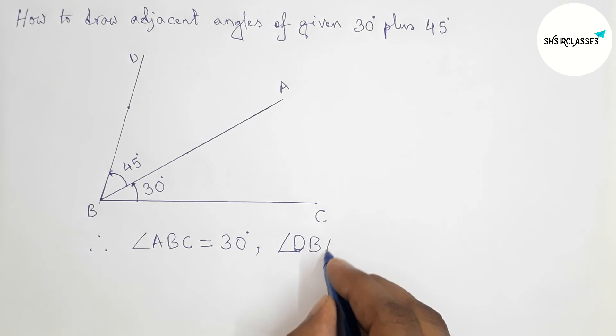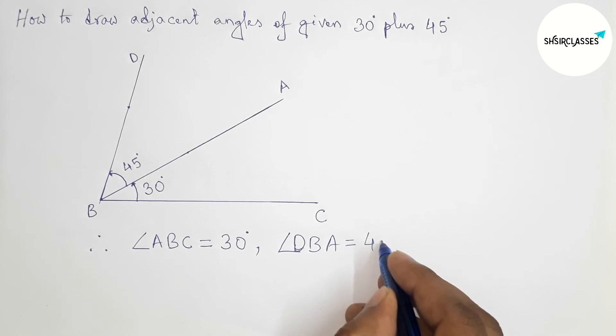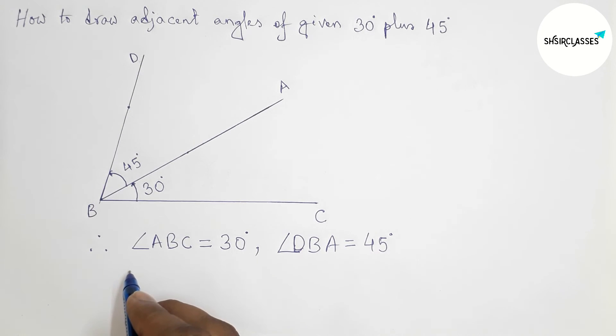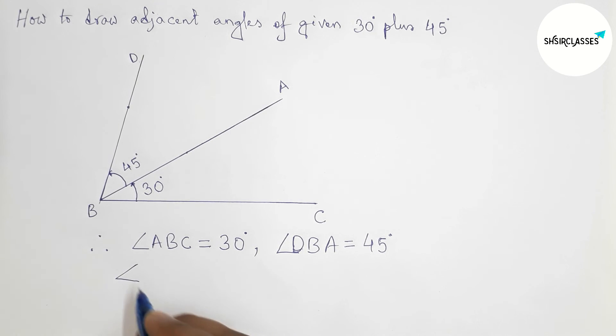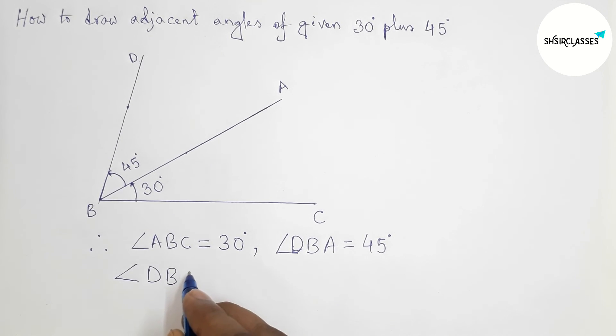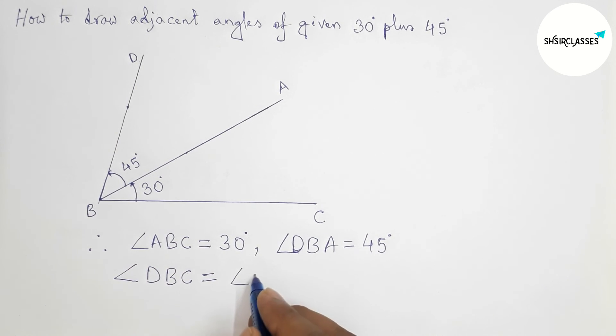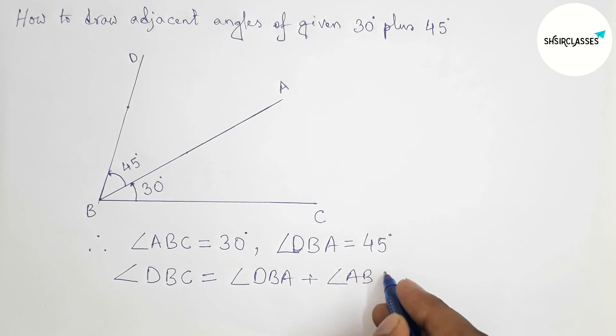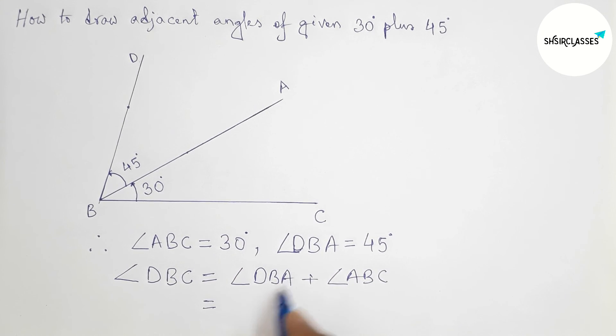Next write down here the sum of these two angles. So first taking angle DBA plus angle ABC. So now putting this, here DBA equals 45 and angle ABC equals 30 degrees. So adding this, this is 75 degree angle.